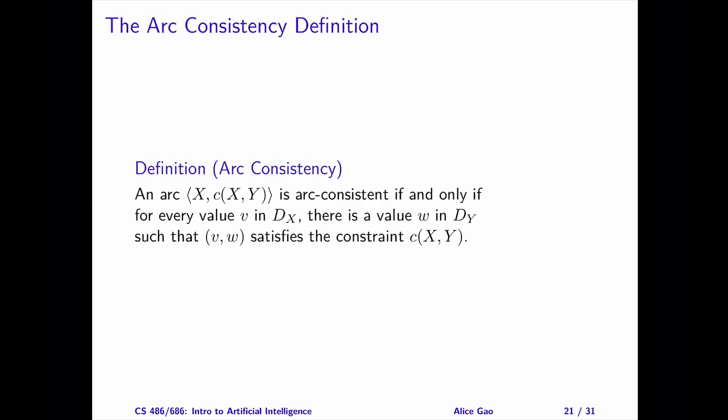Let's look at the arc consistency definition. There are two variables, x and y, with domains D_x and D_y. c(x,y) is a binary constraint. Consider the arc with x as the primary variable. For example, this arc is consistent if and only if, for every value v in the domain of x, there is a value w in the domain of y, such that v and w satisfy the constraint c.